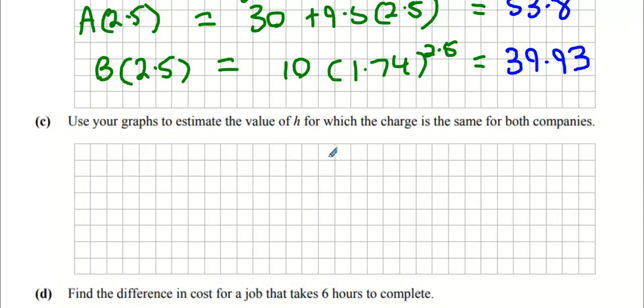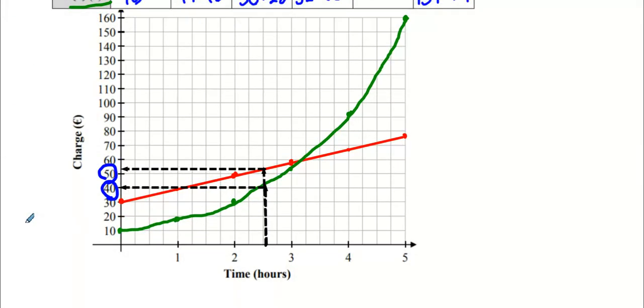Use your graphs to estimate the value of H for which both companies charge the same amount. Where do you think that happens? See this black point here, what do you reckon? 3.1? Probably 3.2. See the four blocks? 3.25 is the first block and 3.5 is the second block. We can see it's very close to the second block, so 3.2 hours would be a good estimate.